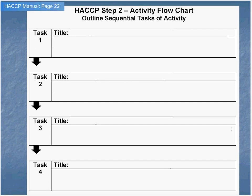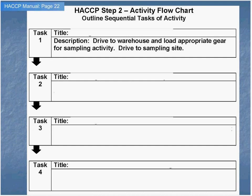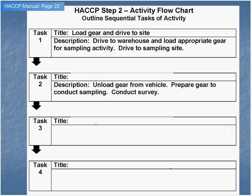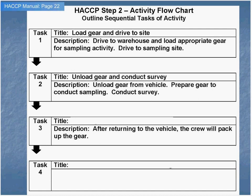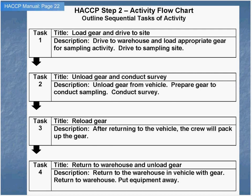Here's the example from the hypothetical cutthroat trout HACCP plan. Task one: drive to warehouse and load appropriate gear for the sampling activity, then drive to the sampling site — or simply, load gear and drive to the site. Task two: unload gear from the vehicle, prepare gear to conduct sampling, and then conduct the survey. Simply: unload gear and conduct survey. Task three: after returning to the vehicle, the crew will pack up the gear — reload gear. Task four: return to warehouse and unload gear.